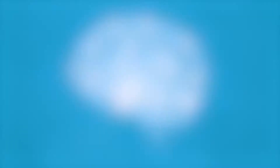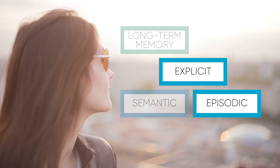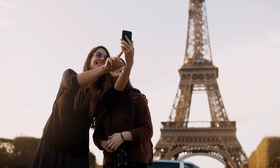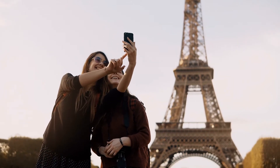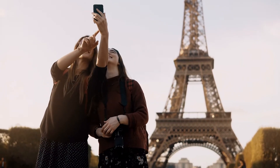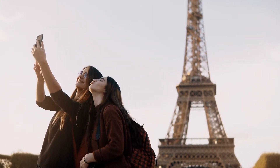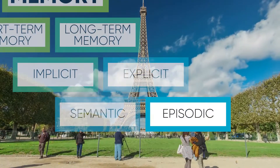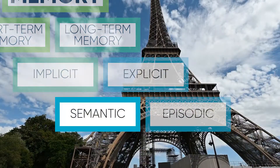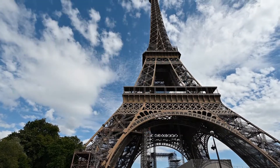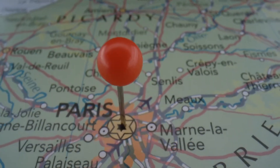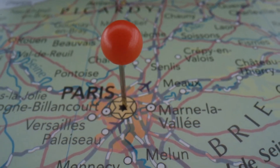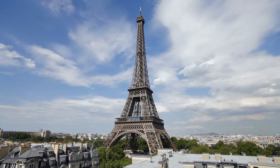Episodic memories are a type of explicit memory because they can be consciously and deliberately recalled. They contain context details that set the scene — remembering what happened, including where you were, who you were with, and some of the sensory details like sights and sounds. In contrast, semantic memory is memory of accepted facts and concepts, like knowing that Paris is the capital of France. It's something we've learned, but we don't connect our knowledge about it to the specific episode when we learned it.